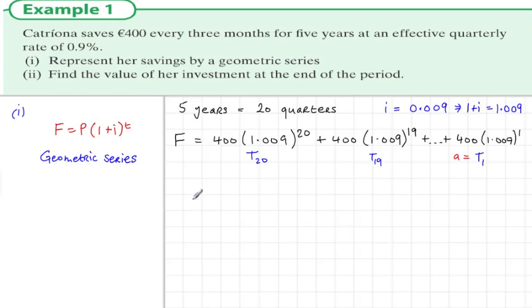Now we need to sum the series to work out the value of investment. The first term, if you stick it in the calculator, works out to be 403.6. The common ratio is 1.009 and there are 20 terms. Now the sum of a geometric series formula is a times (1 minus r to the power of n) divided by (1 minus r).